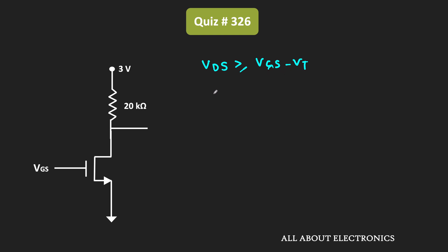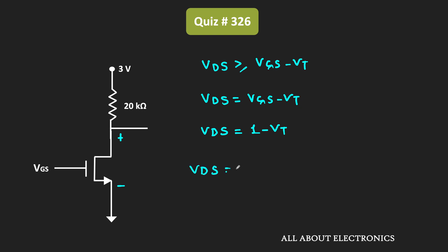It will operate at the edge of the saturation whenever Vds is equal to Vgs - Vt. Here we have been given that Vgs is equal to 1V, so at the edge of saturation this voltage Vds will be equal to 1 - Vt. Moreover, this voltage Vds can also be expressed as Vdd minus Id times Rd, where Rd is equal to 20kΩ.